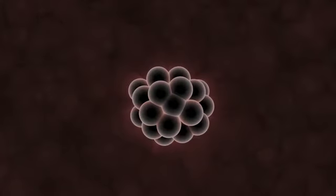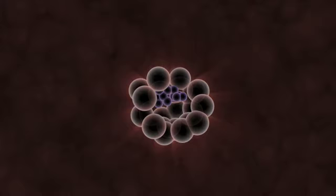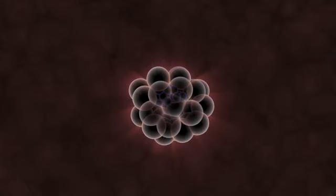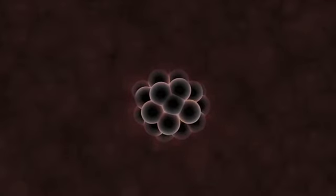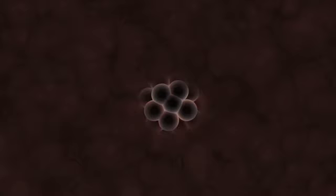Inside the blastocyst, we find the group of cells that will actually develop into a human being. The outer cells will give rise to the placenta and other supporting tissues. At this stage, it implants itself into the wall of the uterus and the pregnancy is initiated.